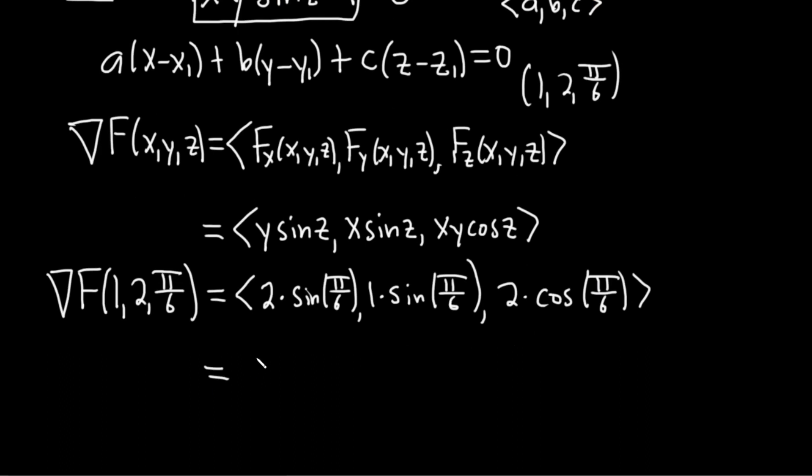This is equal to 2. So the sine of pi over 6 is 1 half. I guess this is 1 half. 1 half. And the cosine of pi over 6 is the square root of 3 over 2. Cancel. Cancel. So we're left with 1, 1 half, square root of 3.